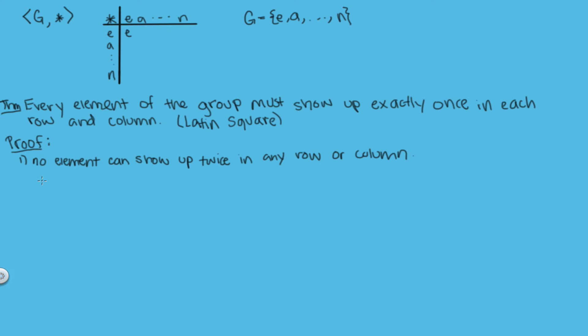We're going to go about this proof by using contradiction. So let's assume that there exists an x in G such that x does show up twice in one row. So that would be like saying that a star a equals b and a star c equals b. But this binary operation table still gives us a group.